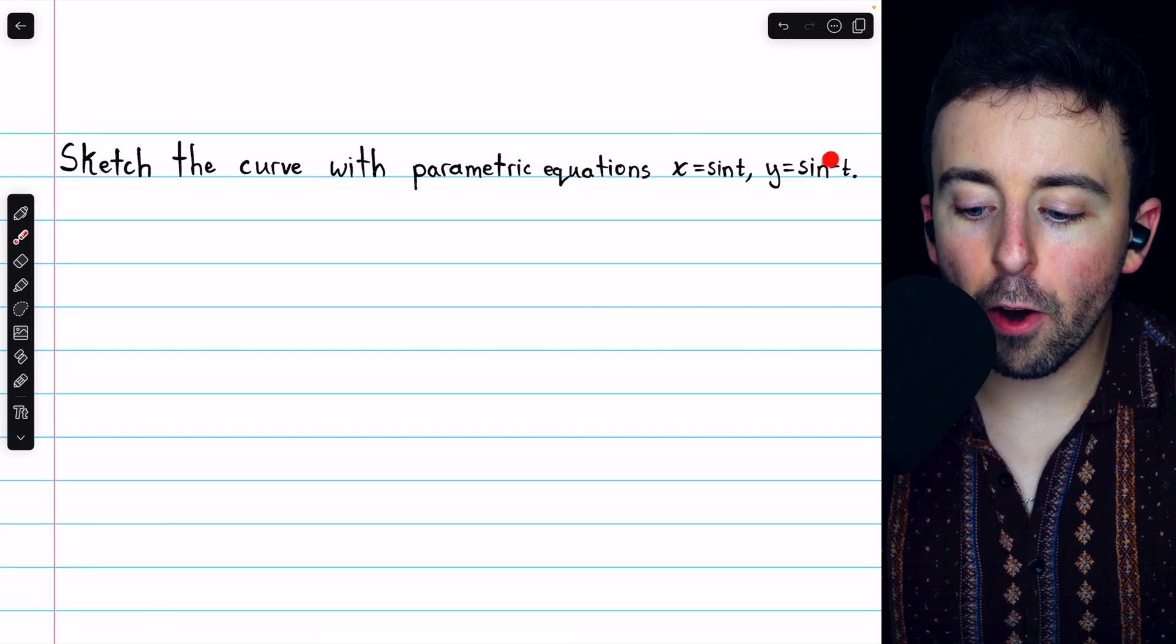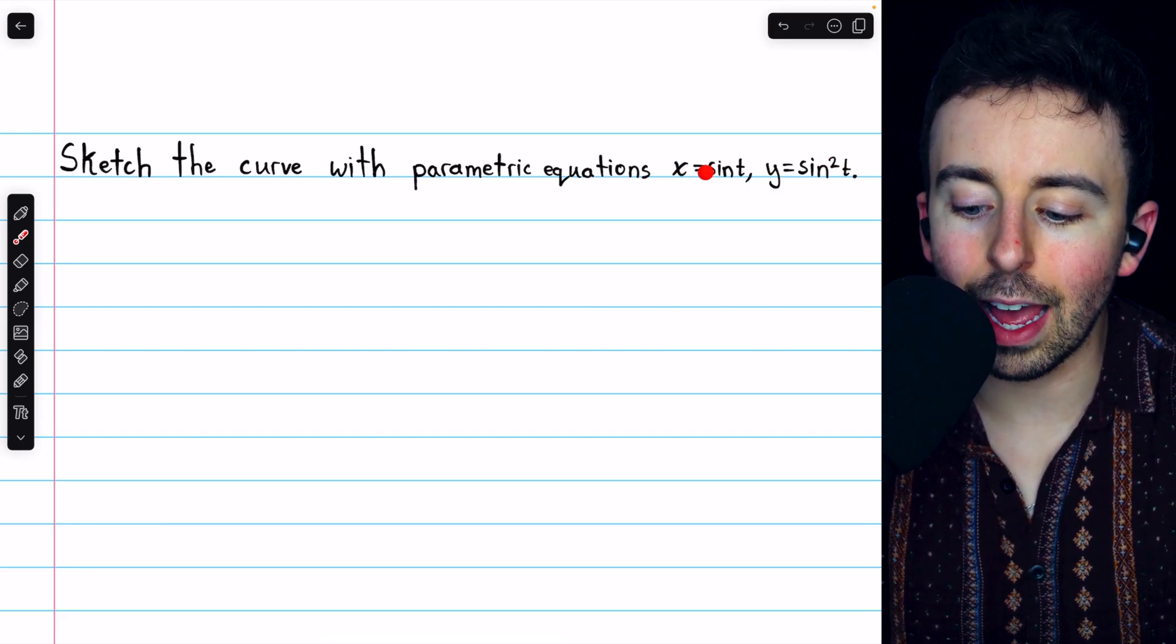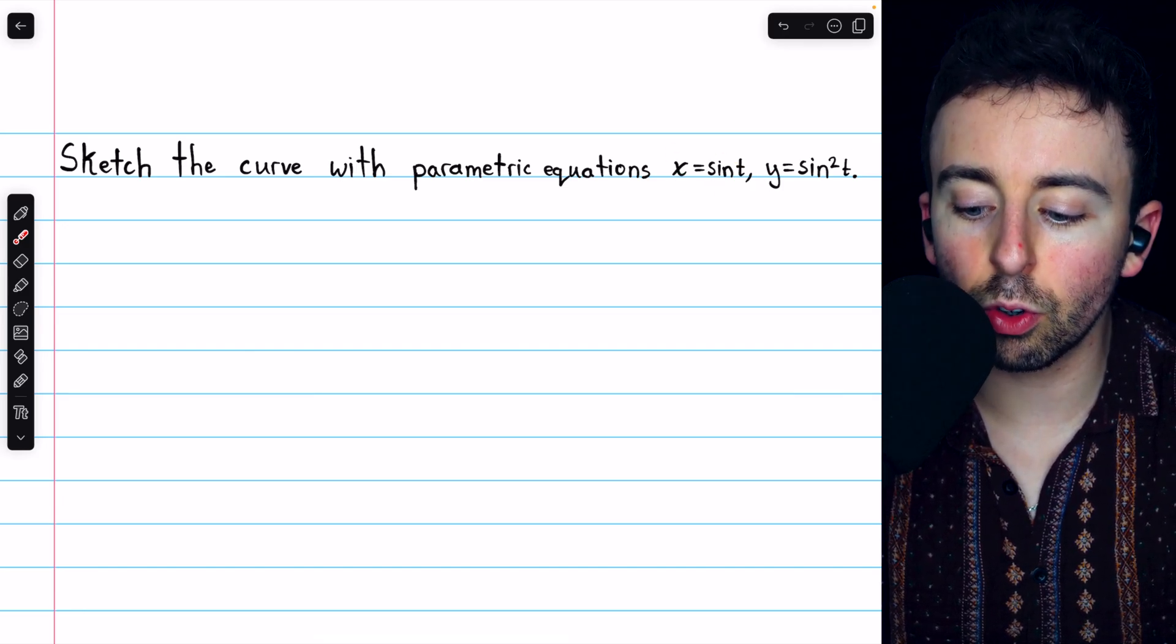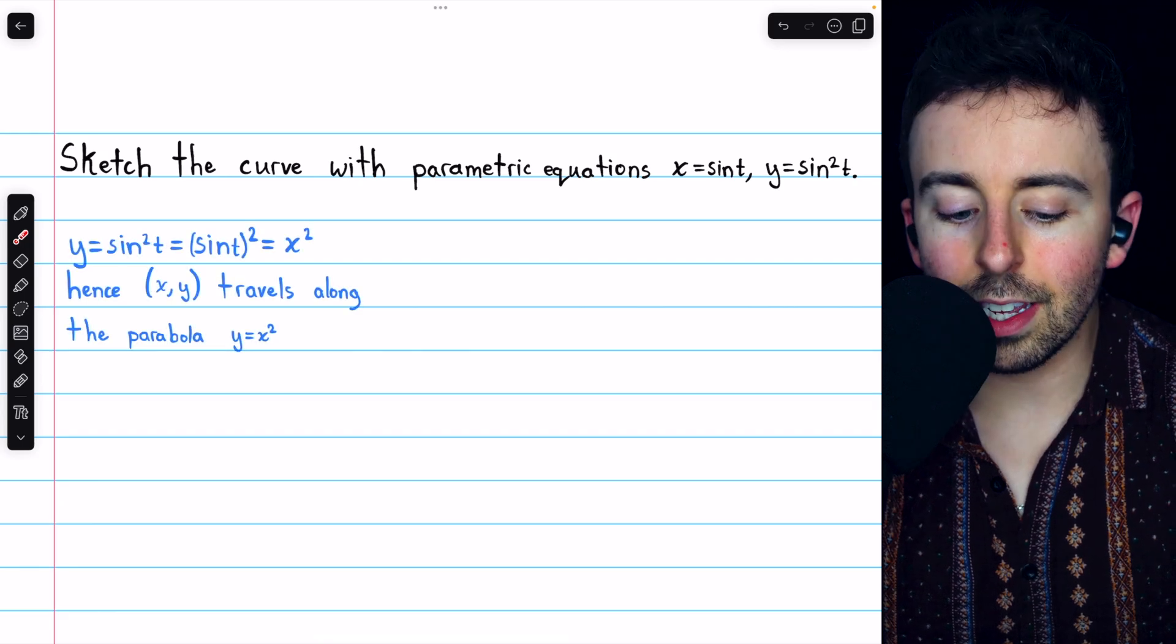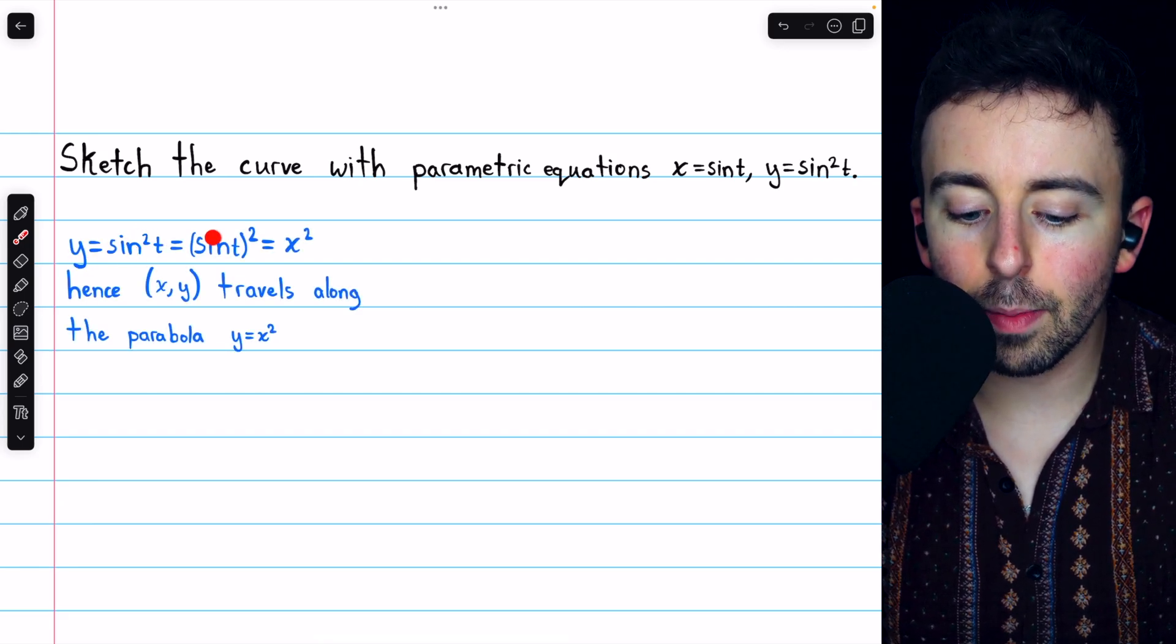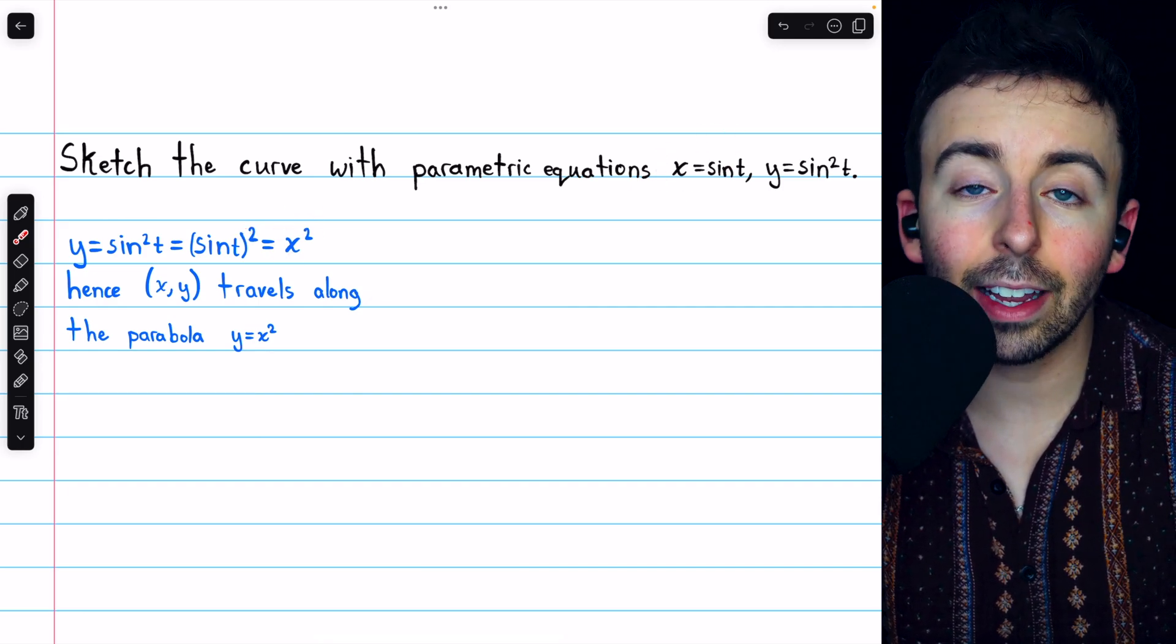So, looking at these parametric equations, do you notice any simple relationship between x and y? Hopefully, it's easy to see that y is just the square of x. We see that y equals sine squared of t, but that's the same as sine of t squared, which is indeed x squared.